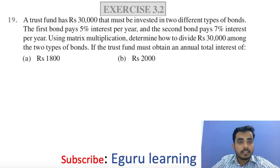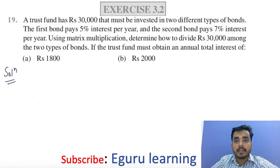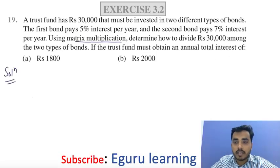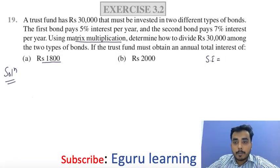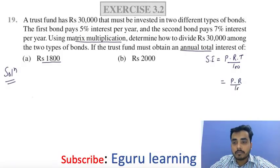So now let's read question number 19. In question 19 we have given: a trust fund has to invest Rs. 30,000 in two different types of bonds. The first bond pays 5% interest per year and the second bond pays 7% interest per year. Using matrix multiplication, determine how to divide Rs. 30,000 among the two types of bonds if the trust fund must obtain an annual interest. The formula for simple interest is P×R×T/100 and since time period is one year, this becomes P×R/100.